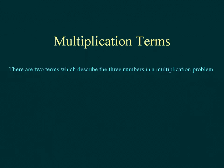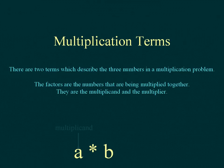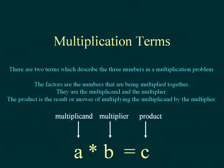There are two terms which describe the three numbers in a multiplication problem. The factors are the numbers that are being multiplied together. They are the multiplicand and the multiplier. The product is the result or answer of multiplying the multiplicand by the multiplier.